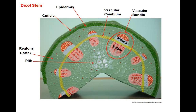Young stems may also have a cuticle, a waxy layer, and a ring of epidermal cells. In young dicots there is a region of ground tissue along the outer rim of the stem known as the cortex, and another region of ground tissue in the center called the pith.